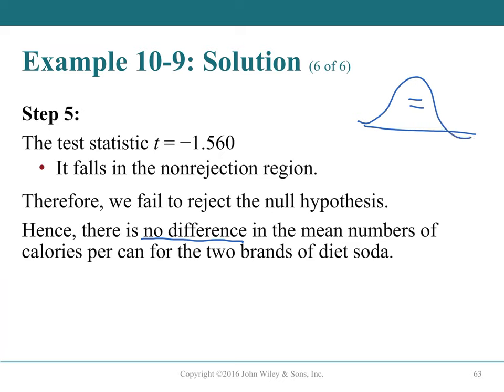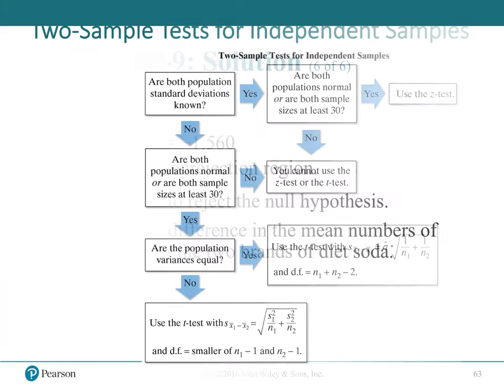A brief sign summary: equals in the center represents H₀; not-equals on both sides represents a two-tailed H_A. For one-tailed tests, change to greater-than or less-than as appropriate.